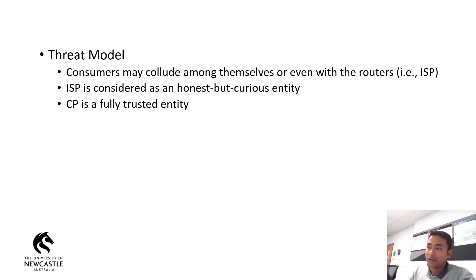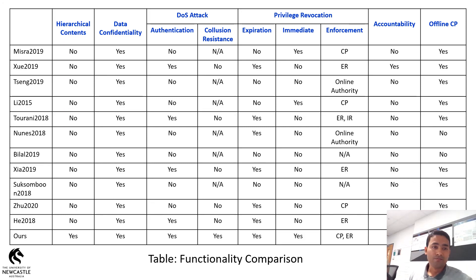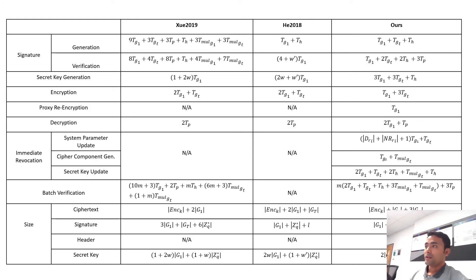In the threat model, we assume that consumers may collude among themselves or even with the routers. The ISP is considered as an honest but curious entity — that is, the ISP will perform the assigned tasks honestly but may try to gain additional information from the system. The content provider is considered as a fully trusted entity. This is a functionality comparison table where we have compared our scheme with notable works in the literature, considering essential functionalities such as support for hierarchical contents, data confidentiality, DoS attack resistance, privilege revocation, accountability, and offline CP. Offline CP means the content provider can remain offline most of the time. We can see from the table that our scheme supports all the essential functionalities while the other schemes do not.